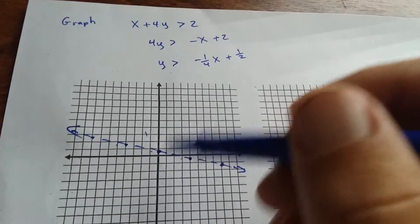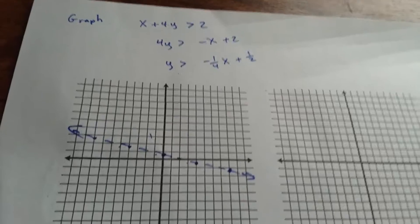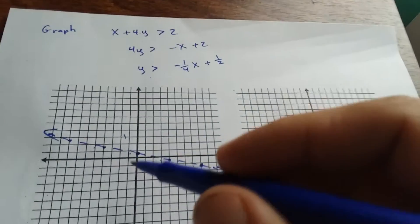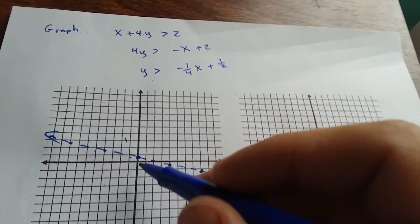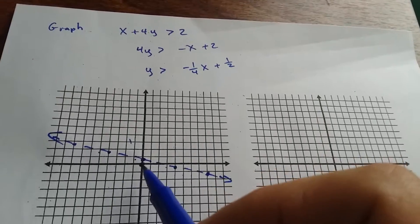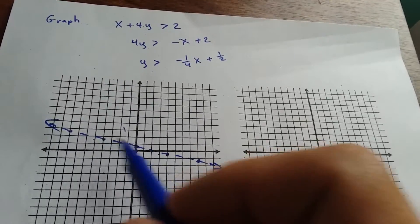Okay, now we've got to decide which side do we shade. And what we do is we pick a test point. If we look at this, 0, 0 is under the line right here. I'm going to pick 0, 0 because it's going to be easy to work with. 0, 0 will be our test point because it's not on the boundary line.